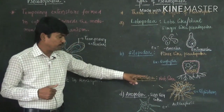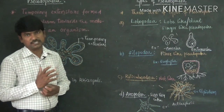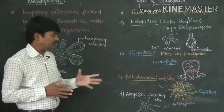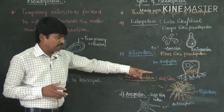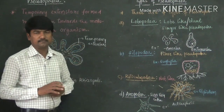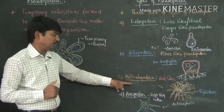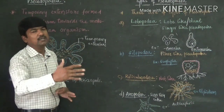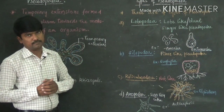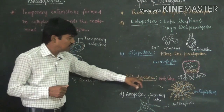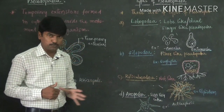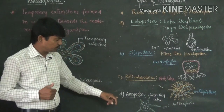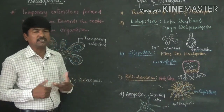The third type is reticulopodia. 'Reticulo' means net-like structures, so net-like pseudopodia are present in some animals belonging to Elphidium. In those animals we can identify reticulopodia, which aid in locomotion. Net-like pseudopodia are present in Elphidium.